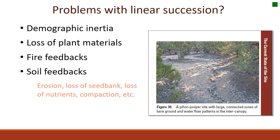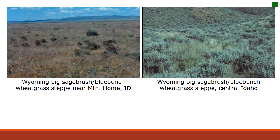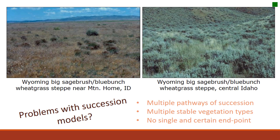Here's an example of why we often don't see linear succession in rangelands. Here are two different community types occupying the same habitat type — Wyoming big sagebrush bluebunch wheatgrass. The photo on the left is dominated by cheatgrass and bottlebrush squirreltail, and the photo on the right is dominated by Wyoming big sagebrush and bluebunch. Both of these communities are relatively stable, so what's going on in these ecosystems?